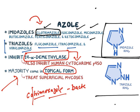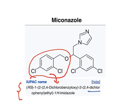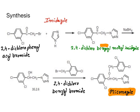Now for miconazole: understand its IUPAC name by identifying its components. It has a dichlorobenzoyloxy group, a dichlorophenyl group, an ethyl bridge, and an imidazole ring. Breaking the structure into individual rings makes naming easier: dichlorobenzoyloxy, dichlorophenyl, ethyl, imidazole — that gives you miconazole.